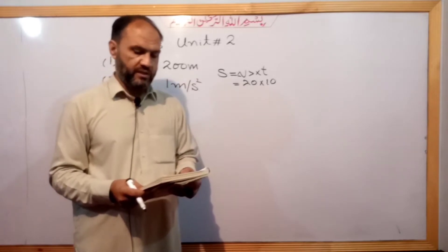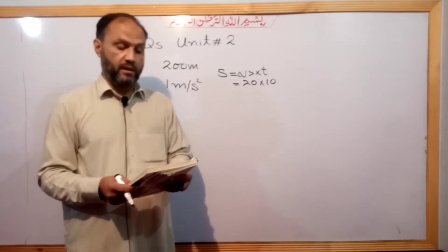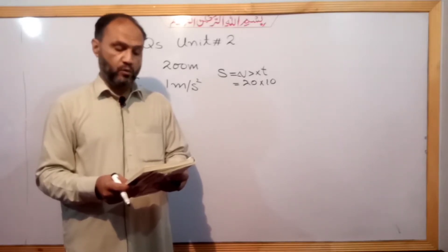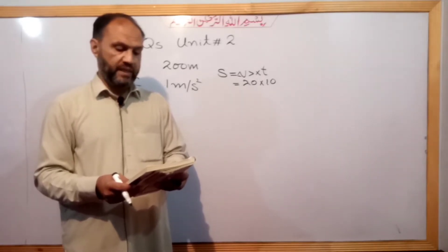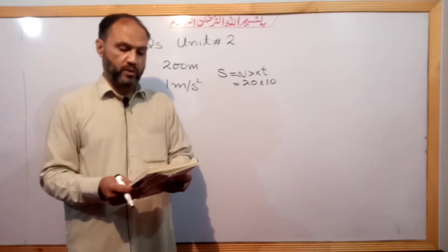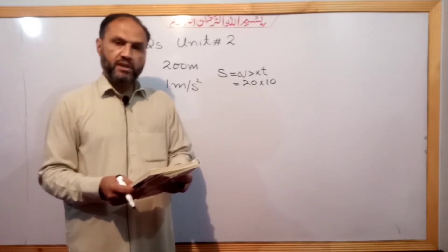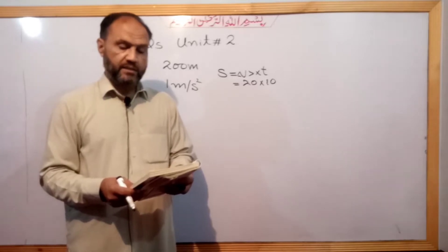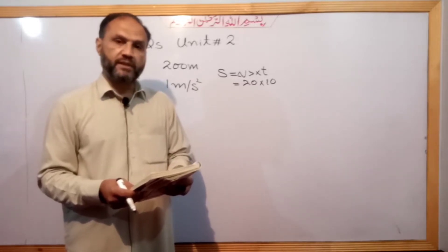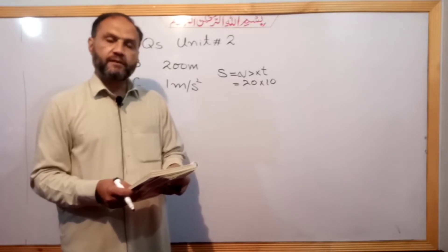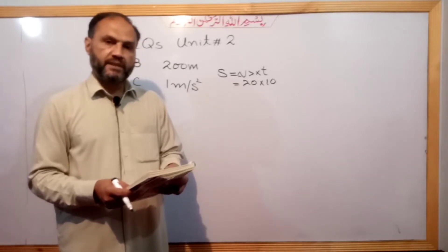Question number 3. A car moving along a straight line at 20 meter per second undergoes an acceleration of 4 meter per second squared. The initial speed or velocity is 20 meter per second and the acceleration is 4 meter per second squared.